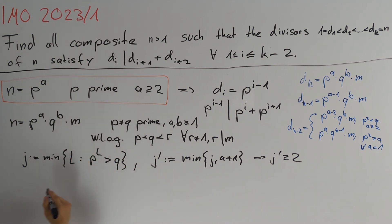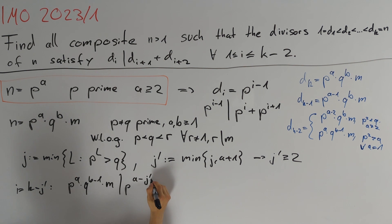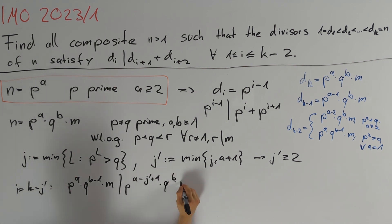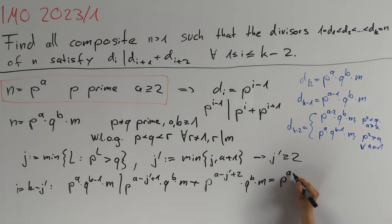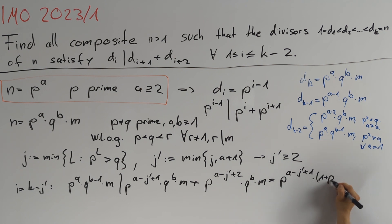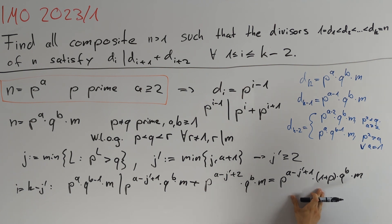Considering the given condition for i equals k minus j', we get that p^a times q^(b-1) times m must divide p^(a-j'+1) times q^b times m, which simplifies to p^(a-j'+1) times q^b times m. Since j' is greater than or equal to 2, the right-hand side is divisible by p at most a minus 1 times, but the left-hand side requires divisibility by p exactly a times — a contradiction.